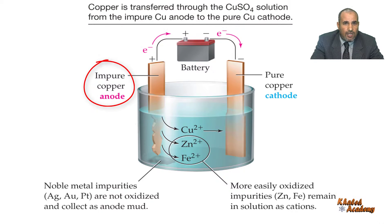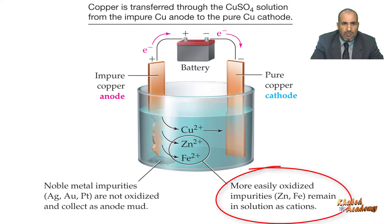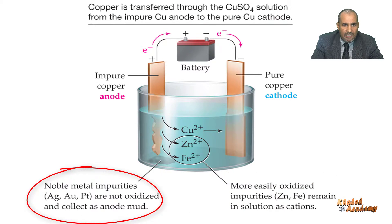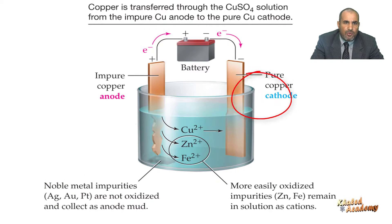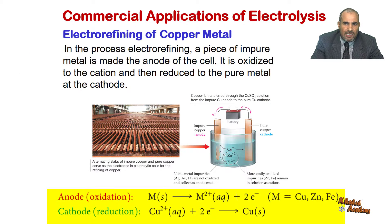At the impure copper anode, copper is oxidized along with more easily oxidized metallic impurities such as zinc and iron. Less easily oxidized impurities such as silver, gold, and platinum fall to the bottom of the cell as anode mud, which is reprocessed to recover the precious metals. At the pure copper cathode, copper ions are reduced to pure copper metal, but less easily reduced metal ions such as zinc ions and ferrous ions remain in solution.